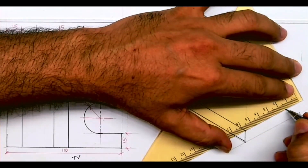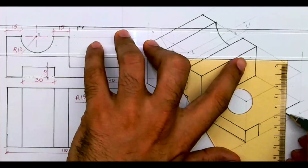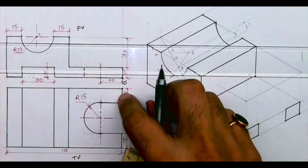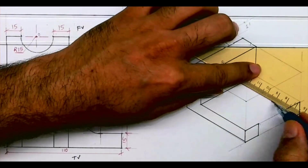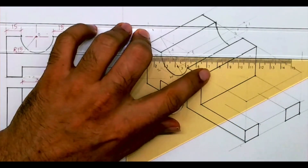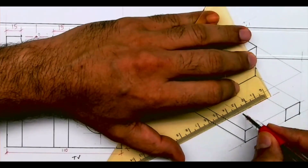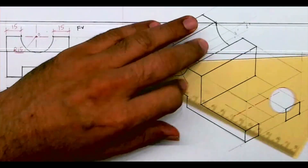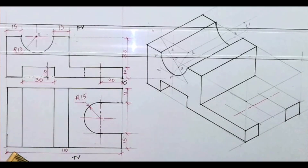Now I will mark 15, 15, then I will draw a vertical line like this. Now I need to go inside by 20 and then I need to draw a circle. This is 30, take midpoint, draw the line. From the center — its radius is 15.